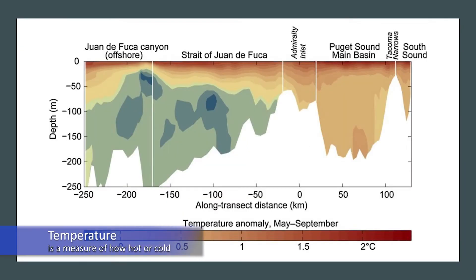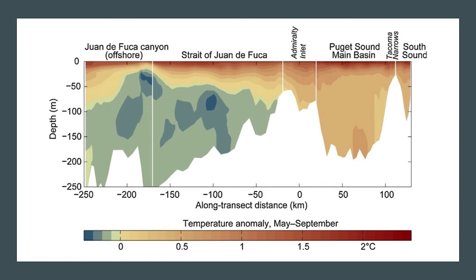Temperature is very important to water quality. Temperature affects the amount of dissolved oxygen in the water, the rate of photosynthesis by aquatic plants, and the sensitivity of organisms to toxic waste, parasites, and disease. Thermal pollution — the discharge of heated water from industrial operations, for example — can cause temperature changes that threaten the balance of aquatic systems.